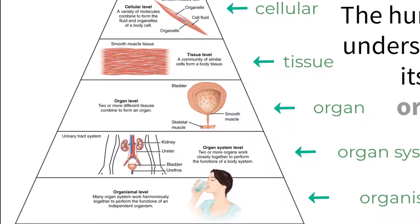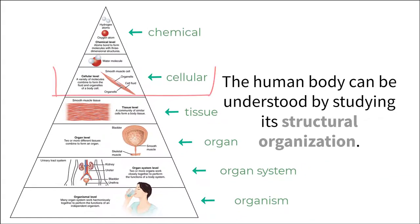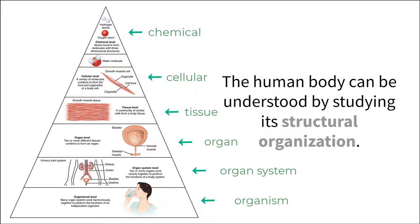We can look at and study an individual cell, but if we were to view many of the same cells working together in the same part of the body, we can call that a tissue, and so on. Keep these levels of organization in mind as you continue to learn about anatomy and physiology. We will talk about each one in more detail throughout the rest of the course.